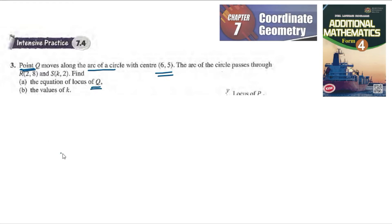So arc of a circle. We know there is a center (6,5) and it is the center of a circle and Q moves along the arc of circle. So Q is anywhere around here. We can see that the distance from the center will always be R.